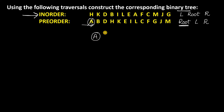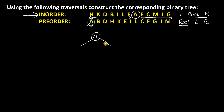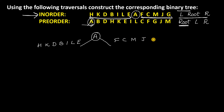Now our next task is to find which nodes will come to the left of A and which to the right. For that, we use the inorder. Search for A in the inorder sequence. Since inorder is Left-Root-Right, all nodes before A — H, K, D, B, I, L, E — will come to the left of A, and all nodes after A — F, C, M, J, G — will come to the right of A.